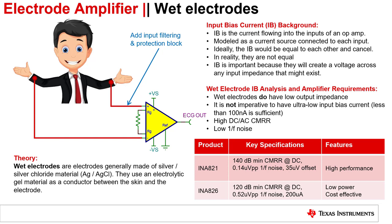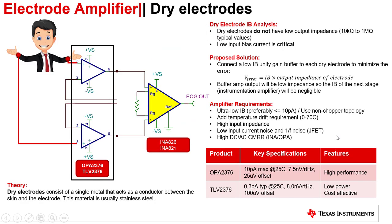In a wet electrode system, we recommend the INA821 for high performance systems. For a more cost-effective or power-conservative solution, we recommend the INA826. Next, we will look at what is required for a dry electrode system.